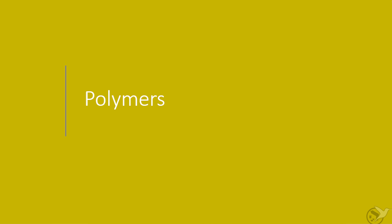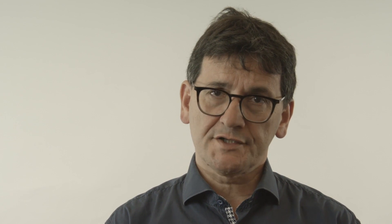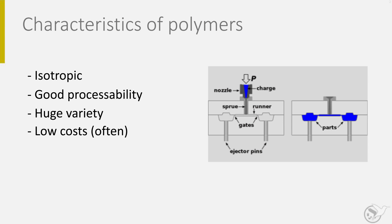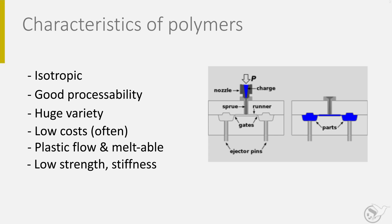The next material group is the polymers. As mentioned before, polymers are not structural materials themselves but are an important ingredient for composites and therefore interesting. Polymers are also isotropic, have good processability, are available in a large variety, and have low costs due to large production volumes. Thermoplastic polymers have plastic forming capabilities when heated and can be melted — these processes are reversible. Thermoset polymers don't have plastic flow and cannot be melted or solidified. The figure shows the injection molding process used for thermoplastic polymers. The process temperature is high and the applied pressure assures proper filling of the mold cavity, and the cycle time is short.